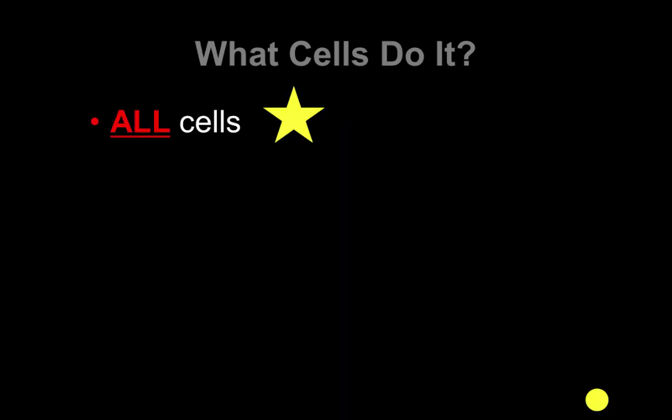So what is the cell cycle? Well, the cell cycle is simply just a cycle of cell divisions. The cell is going to divide, it goes back through the cycle and then it will divide again. All cells do this. That's a very important thing. All cells will go through the cell cycle, regardless of what kind of cell they are.